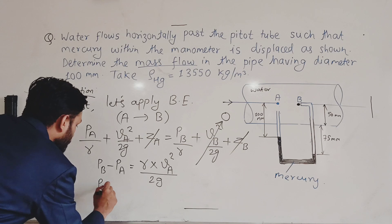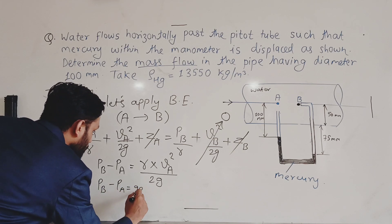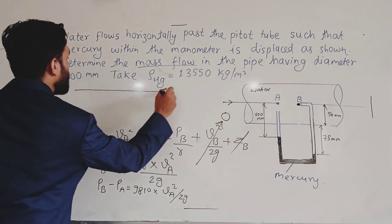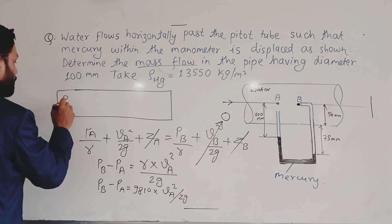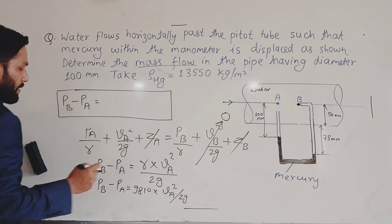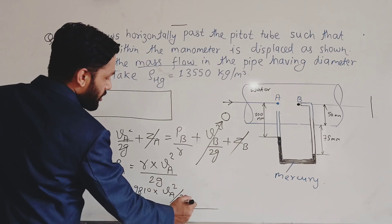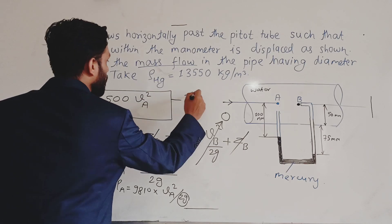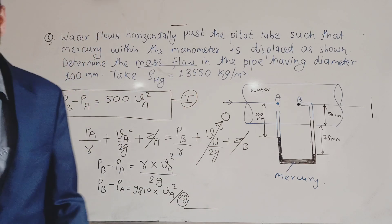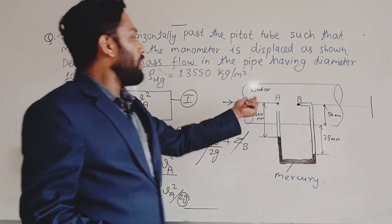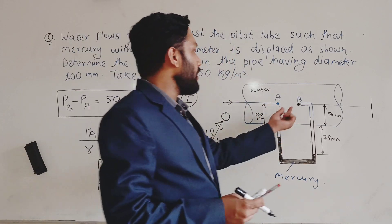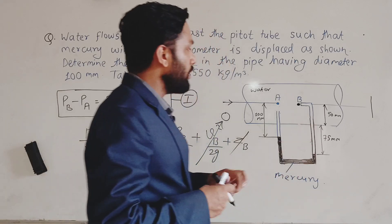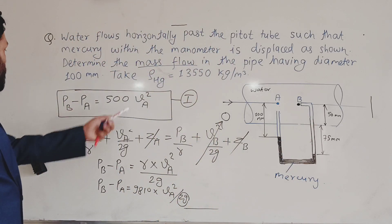Substituting γ_water = 9810 N/m³: P_B − P_A = 9810 × v_A² / (2 × 9.81) = 9810 / 19.62 × v_A² = 500 v_A². This is Equation 1. So from Bernoulli applied A to B, with v_B = 0, we have P_B − P_A = 500 v_A².